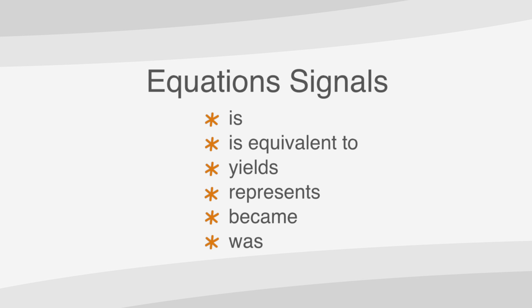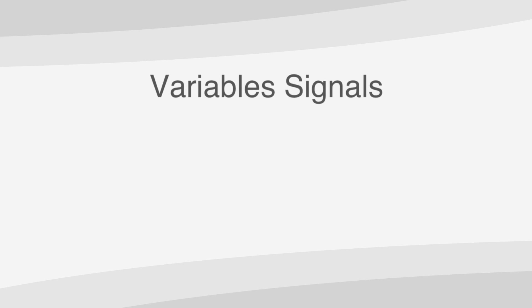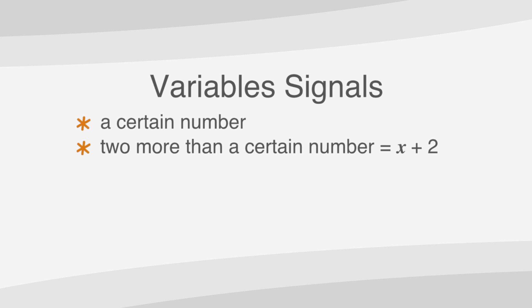You'll also need to know when to put in a variable or unknown. Typically you'll see words like 'a certain number.' So '2 more than a certain number' is just a fancy way of saying x plus 2.